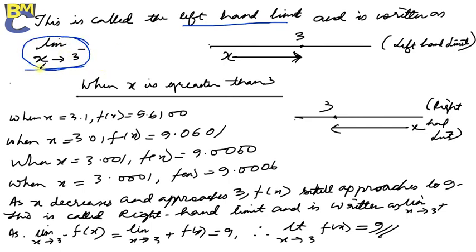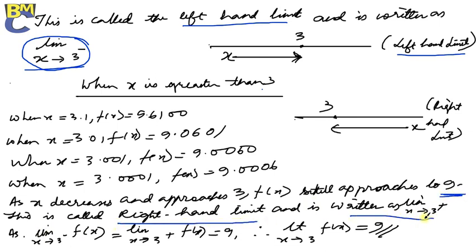When x approaches 3 from the left-hand side, we write x tends to 3 minus. Here x is increasing and becoming closer to 3 from the left-hand side, and this is known as the left-hand limit. When x is greater than 3, let us take the values 3.1, 3.01, 3.001. As x decreases and approaches 3, f(x) still approaches and reaches 9. This is called the right-hand limit, written as x tends to 3 plus. Since the left-hand limit and right-hand limit are both equal to 9, we say the limit of f(x) as x tends to 3 is 9. Remember: when left-hand limit equals right-hand limit, we can write it without any symbol.